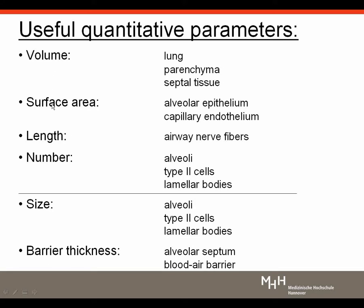Derived from volume, surface area, length, and number, we can also obtain further parameters like mean particle size — which is volume divided by number and therefore a three-dimensional parameter. Another derived parameter is mean barrier thickness, which has great functional relevance: it is volume divided by surface area, making it a one-dimensional parameter. We must always keep in mind that parameters have a certain dimension — three-dimensional, two-dimensional, one-dimensional, or zero-dimensional — including derived ones.